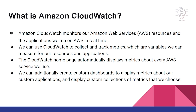So what is Amazon CloudWatch? Amazon CloudWatch monitors our AWS resources and the applications running on AWS in real-time. We can use CloudWatch to collect and track metrics, which are variables we can measure for our resources and applications. The CloudWatch home page automatically displays metrics about every AWS service that we use. We can additionally create custom dashboards to display metrics about our custom applications and a custom collection of metrics that we choose.